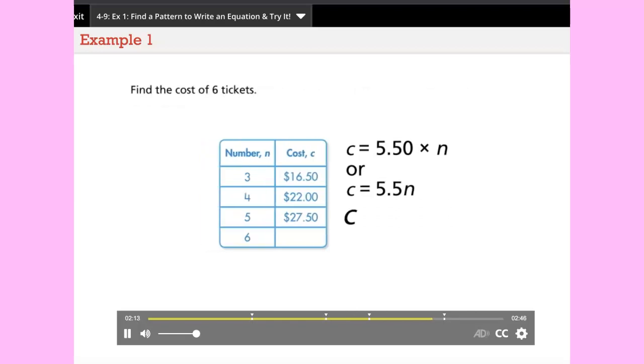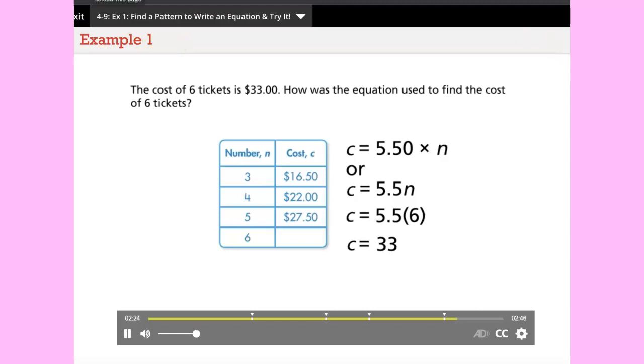The cost of six tickets. Find the cost of six tickets. The cost of six tickets is thirty three dollars.